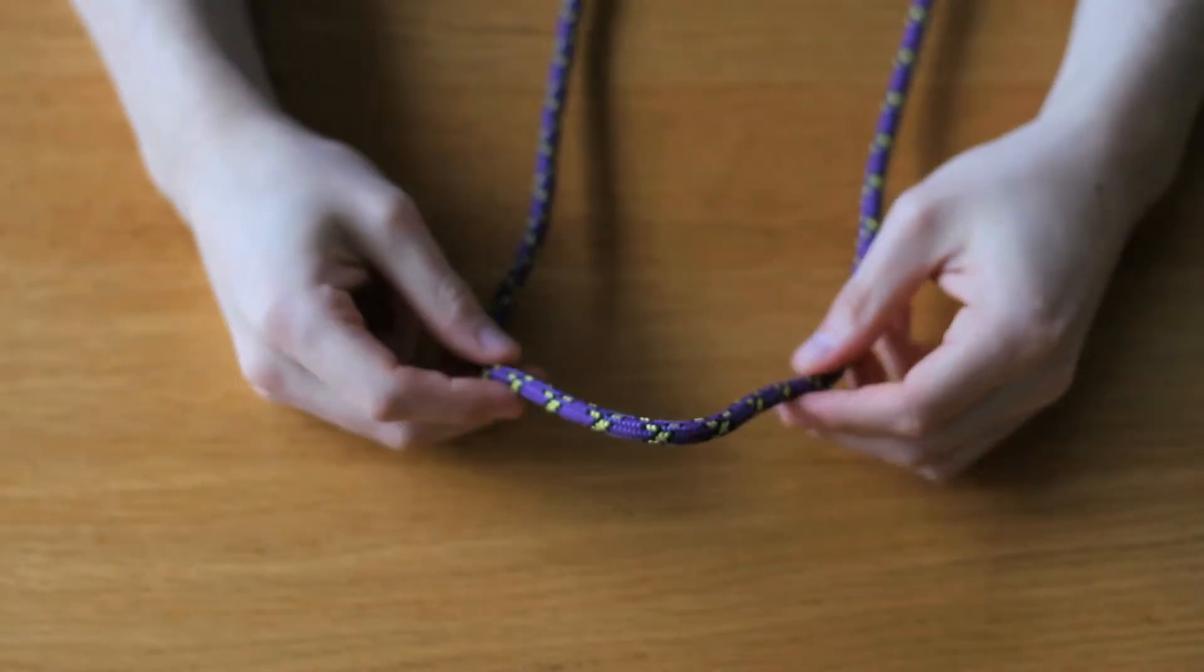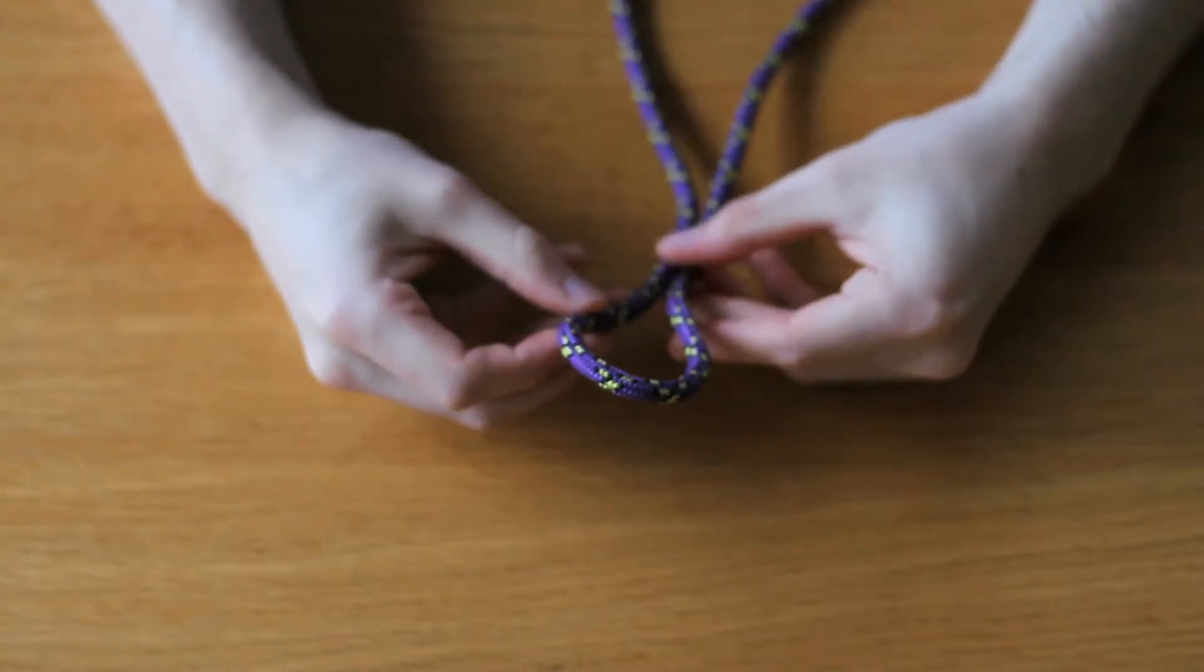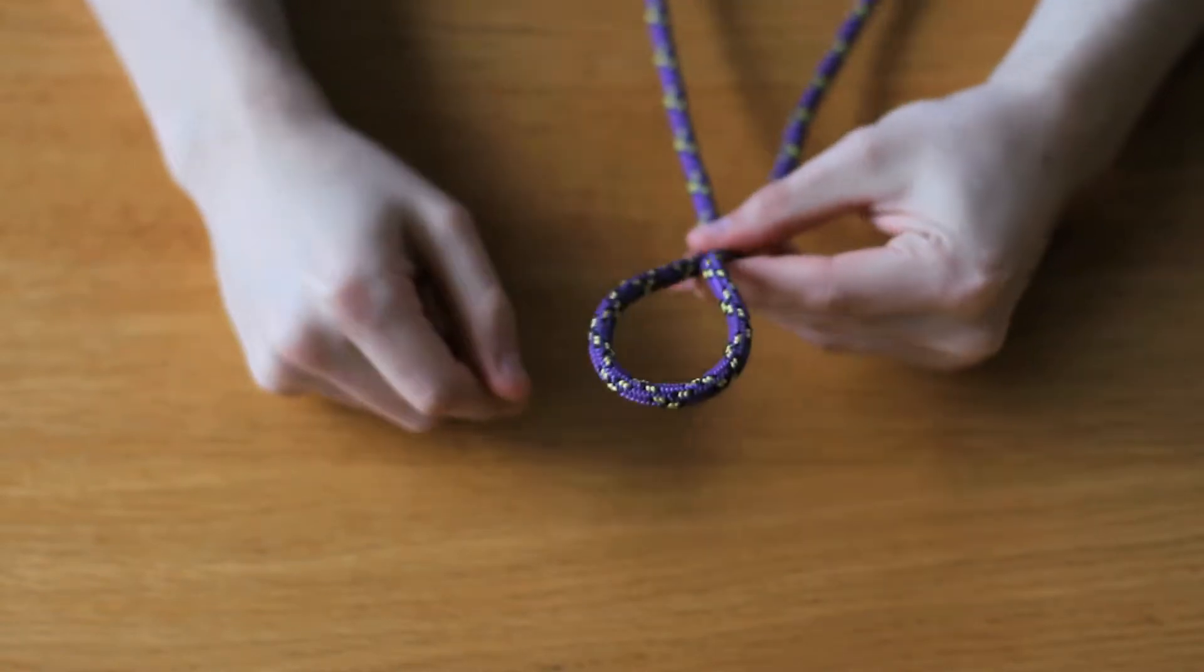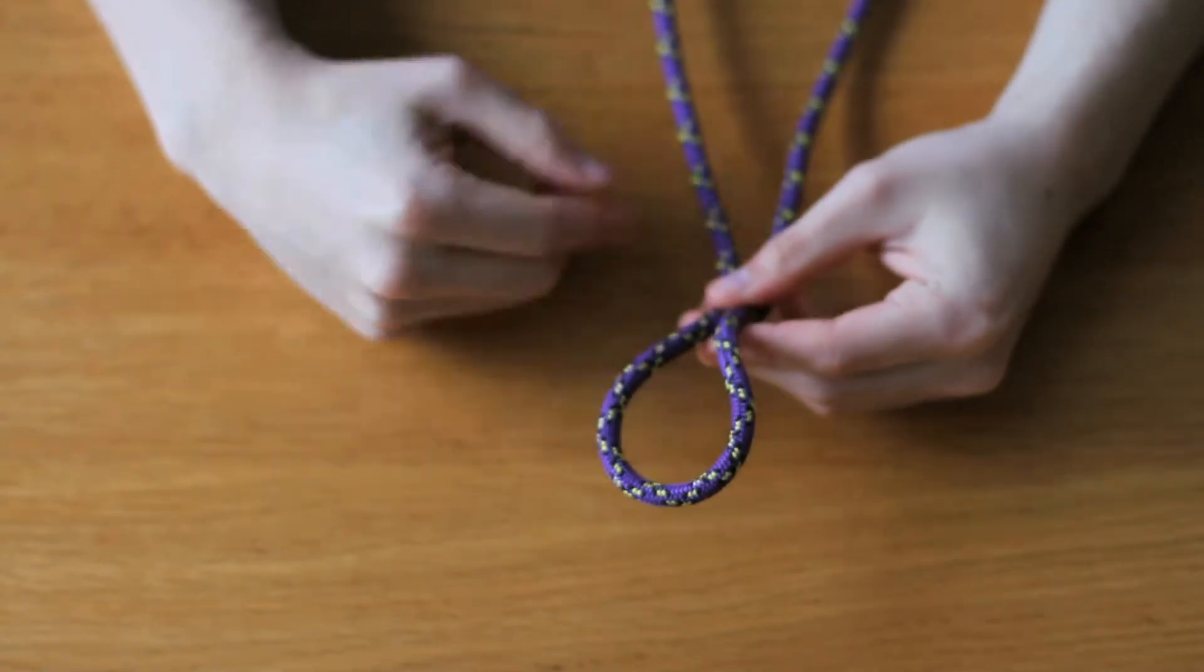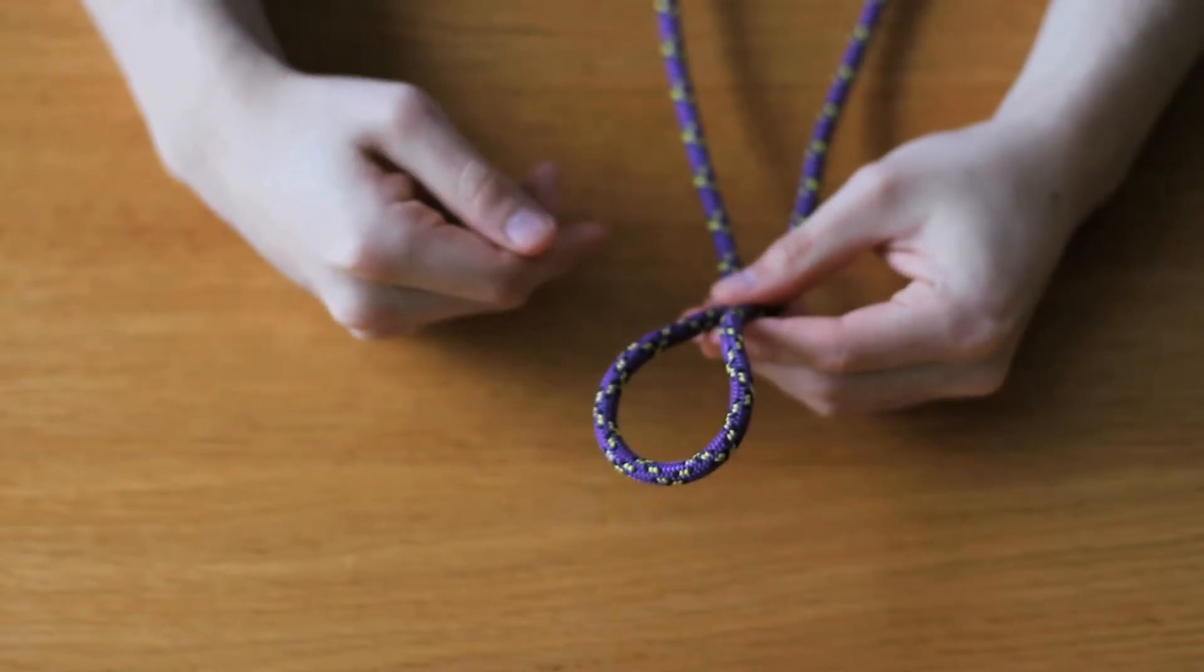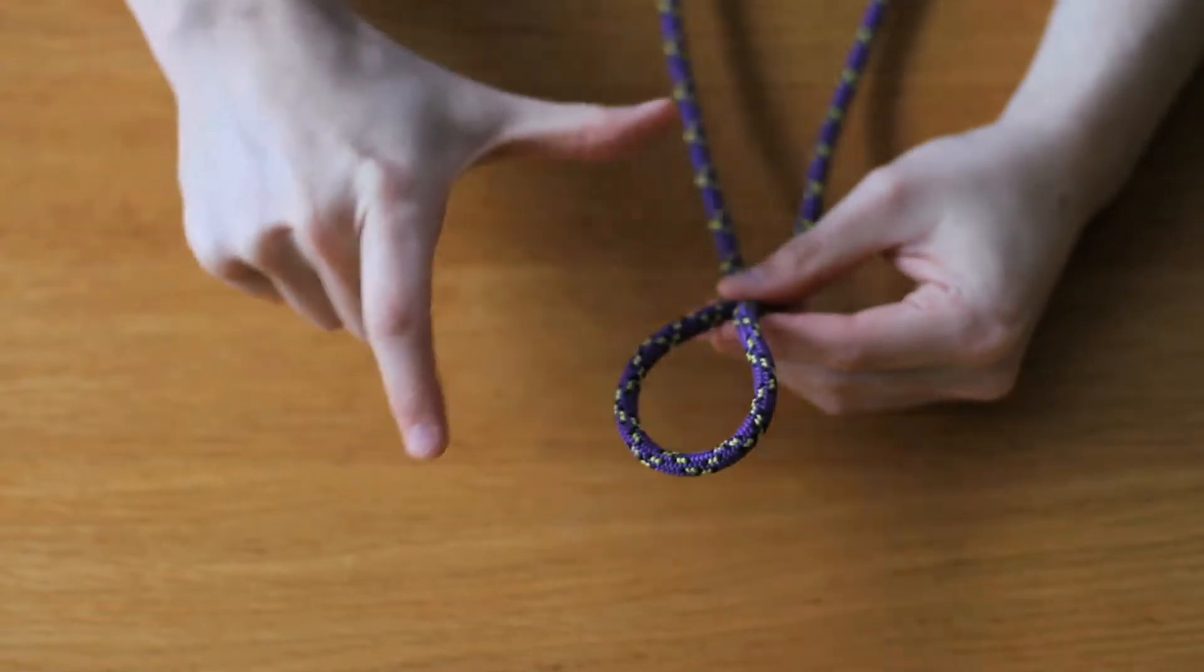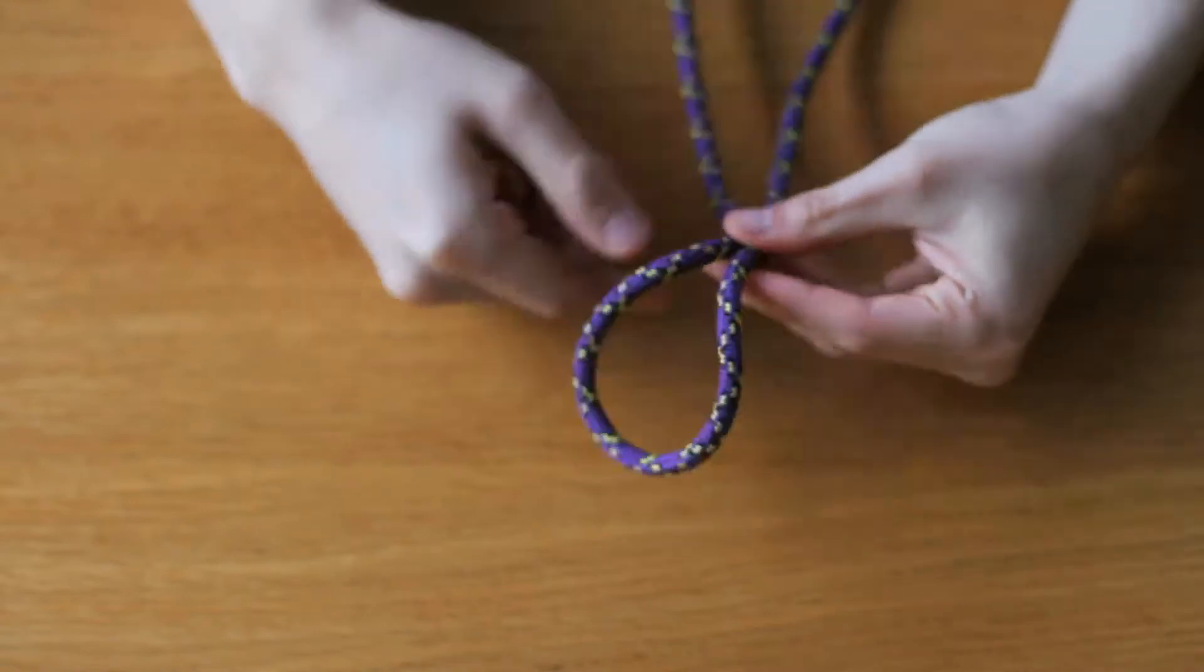Hi everyone, today we're going to talk about the clove hitch. The clove hitch is an extremely popular and useful knot in climbing because it allows you to quickly tie accessory cord or rope to something and easily adjust the length of the two tails.